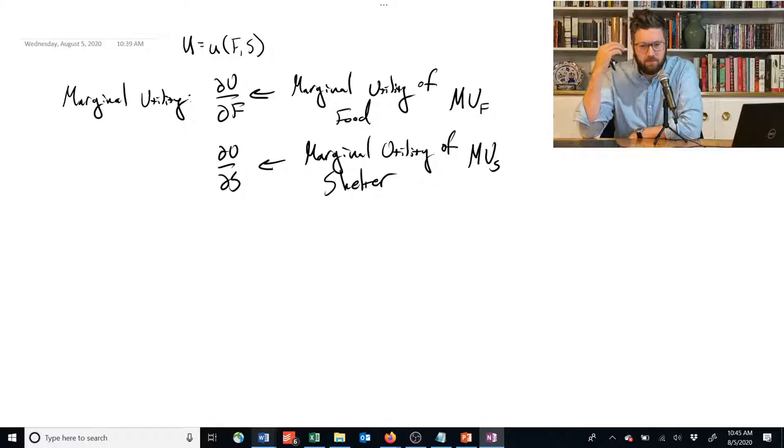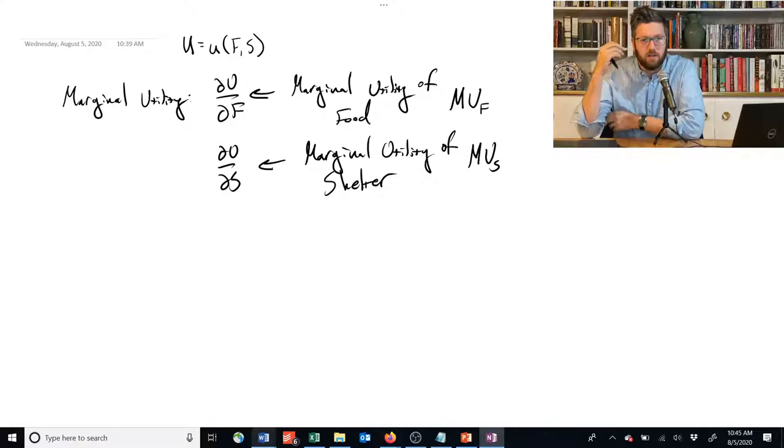So this is one of those situations where it's useful to sort of pretend for the moment that utility is a measure of how happy you are, how much pleasure you get, because then it's really easy to think about what this marginal utility is giving us. So if I get a little bit more food, how much does my pleasure or happiness go up?